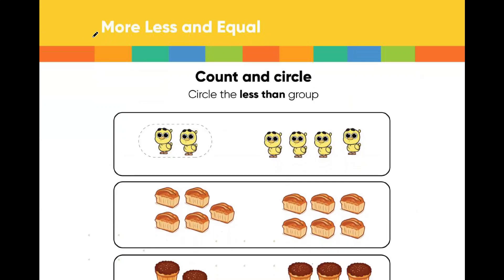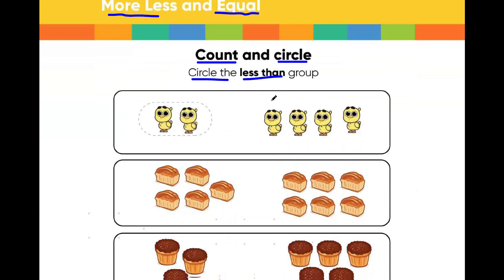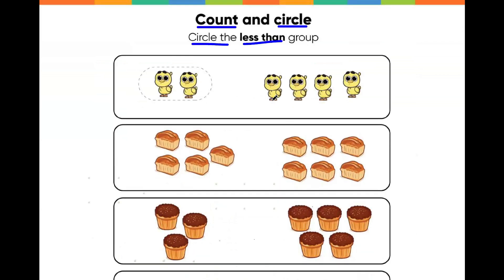Hi children, today we're going to learn about more, less, and equal. Now what does it mean? It means that we have to count and we have to circle. We have to circle the less than group. Let me give an example first and then we would start doing it.